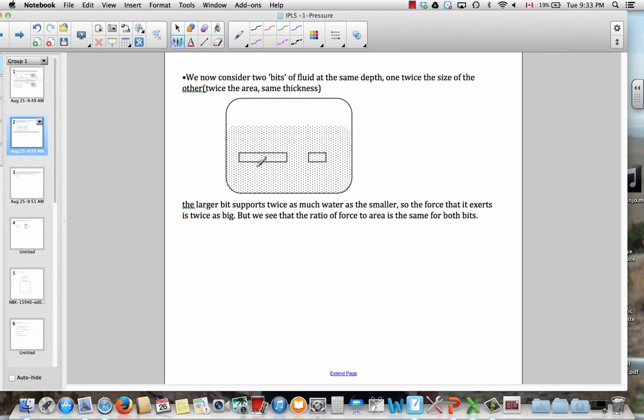Now, if we consider two bits of fluid, one twice the area of the other, then the larger fluid bit is clearly going to be supporting more fluid volume and more fluid weight. So with twice the area, it's also supporting twice the weight. And if this is area A, then it's supporting weight F. So while the amount of force on this bit is different, if we construct the ratio of force to area, we see that it's the same for both of those bits.